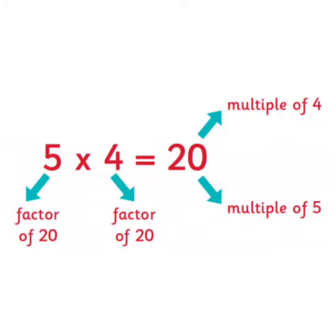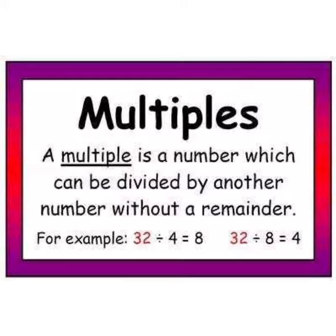In my last video you learnt about factors. Here you can see that 5 multiplied by 4 is equal to 20. 5 and 4 are factors of 20. But on the other hand, you can see that 20 is a multiple of 4 as well as 5.